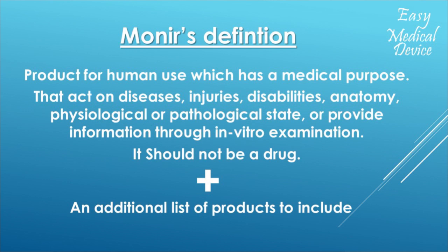Okay, we are right at the end. Now, if I want to summarize my definition — let's call it Munir's definition for medical devices. It's not an accurate definition, just something to remind you what a medical device is. So: it's a product for human use which has a medical purpose, that acts on disease, injuries, disabilities, anatomy, physiological or pathological state, or provides information through in vitro examination, should not be a drug, and there is an additional list of products to include. You can create yours too — it's not official.